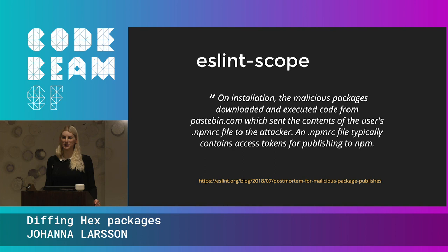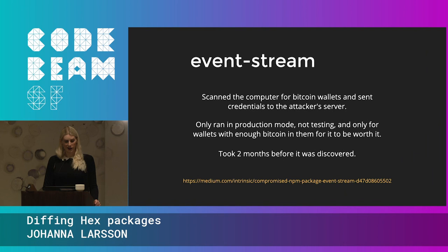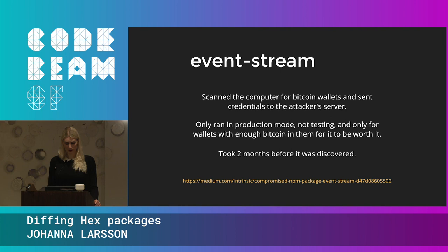Someone noticed that when they were installing their packages it was throwing errors, and they looked into why. That same day, npm actually revoked every single API token on the entire registry. This happened because the maintainer had reused a password from a different service that had been breached. Another one is EventStream — a little more sophisticated. It scanned the computer for Bitcoin wallets and sent credentials to the attacker's server, but it would only run in production mode, not test mode, and only if the Bitcoin wallet contained enough money for it to be worth it. This one was more difficult to discover — it was out on the registry for two months. I actually installed this package on my machine. I didn't have any Bitcoin wallets, so it's fine.